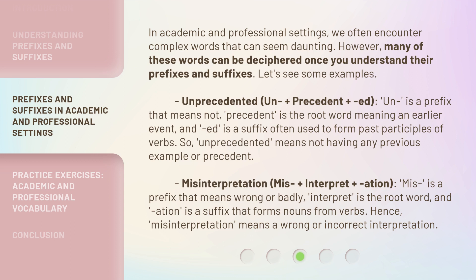'Misinterpretation': mis + interpret + ation. 'Mis' is a prefix that means 'wrong or badly.' 'Interpret' is the root word. And 'ation' is a suffix that forms nouns from verbs. Hence, 'misinterpretation' means a wrong or incorrect interpretation.